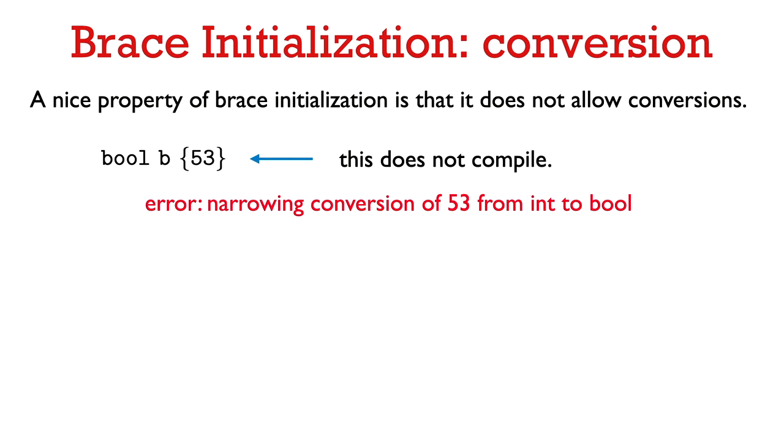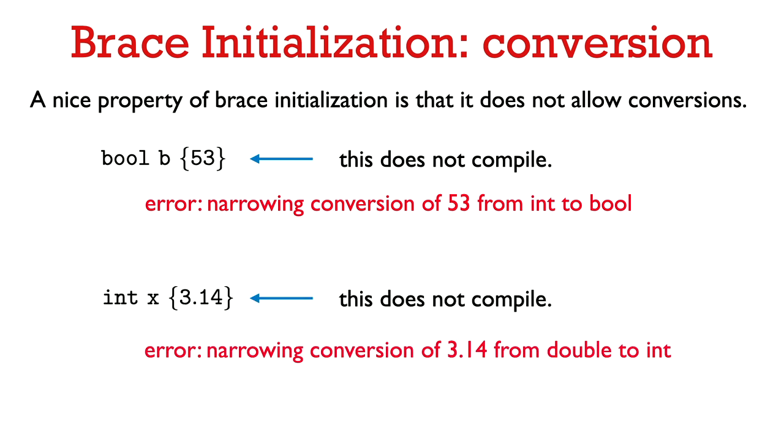So a nice property of brace initialization, which distinguishes it from other kinds of initialization, is that it does not allow conversions. So remember that we could say bool B equals 53, and that compiled with no problem. It just implicitly converted 53 into true. But if we try to initialize B to the value 53 using brace initialization, then the compiler will actually alert us that there's a conversion going on here, and it throws an error. So it says, error, narrowing conversion of 53 from int to bool. So this code's not going to compile. So similarly, if we try to brace initialize an integer with a floating point value, this is not going to compile. And again, it's going to tell us that there's an error, that there's some conversion going on here.